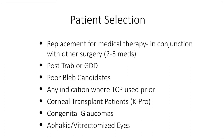The findings on light microscopy and SEM have really dictated which patients I use ECP in versus those where I might use CPC. ECP is used as a replacement for medical therapy — if I'm doing cataract surgery and the patient is on two or three medications, I'll do ECP to try to get them off one or two. I'll typically use ECP in patients who have failed trabeculectomy or who have a functioning glaucoma drainage device where the pressure is not quite at goal and I don't want to put another tube in. In patients who are poor bleb candidates because of conjunctival scarring, any indication where transcleral CPC might have been used prior, ECP still applies.